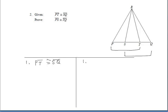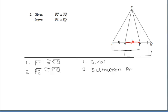We know that segment PT is congruent to segment SQ because it's given. We want to get PS congruent to TQ. Once again, that overlapping is happening. We cannot make those segments any larger than they already are, but we can remove that smaller segment they share, segment ST. So if we subtract off that red segment ST from the two larger segments, we result in two smaller congruent segments. This is the subtraction property — we started with two larger congruent segments and ended up with two smaller congruent segments.